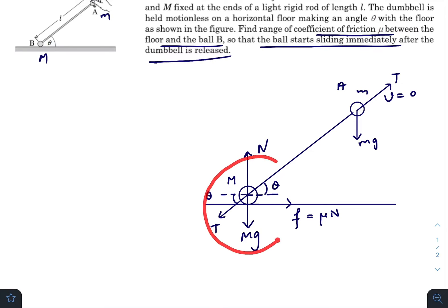As you can see, this mass in the limiting condition will remain at rest. That is, the net force on ball B will be zero. So the total upward force, that is N, equals the total downward force, T sin θ plus Mg. This is our first equation. Force towards right and force towards left will also be same, that is μN equals T cos θ.